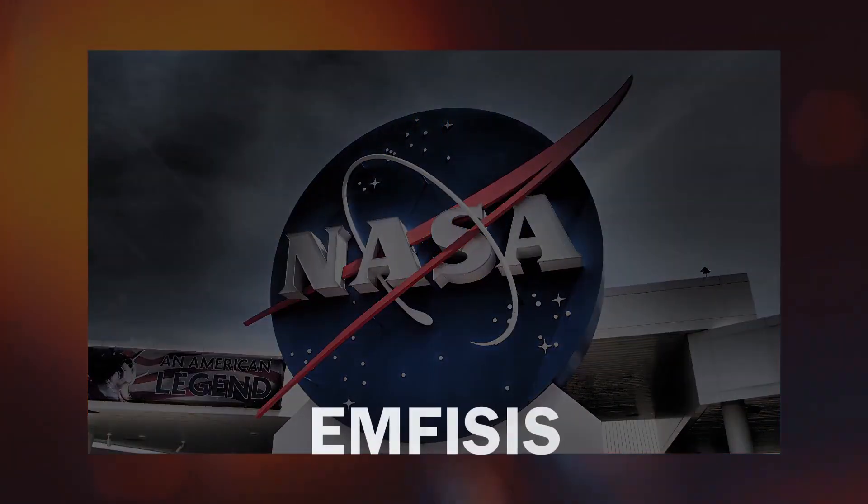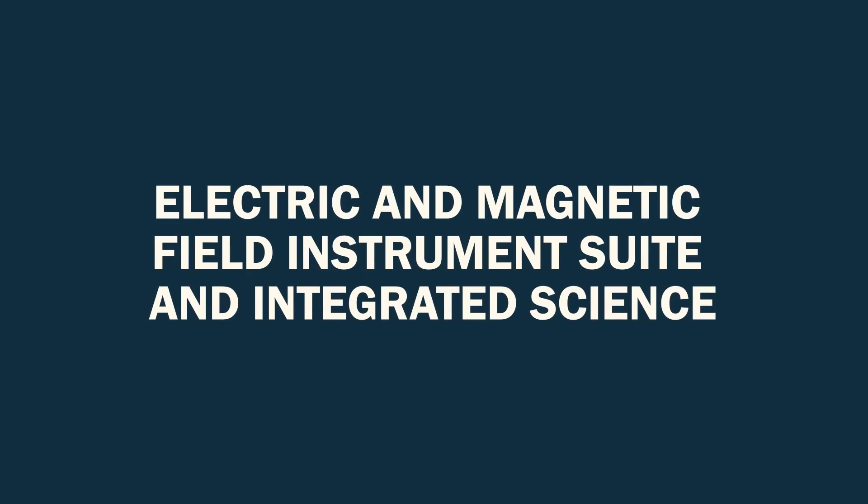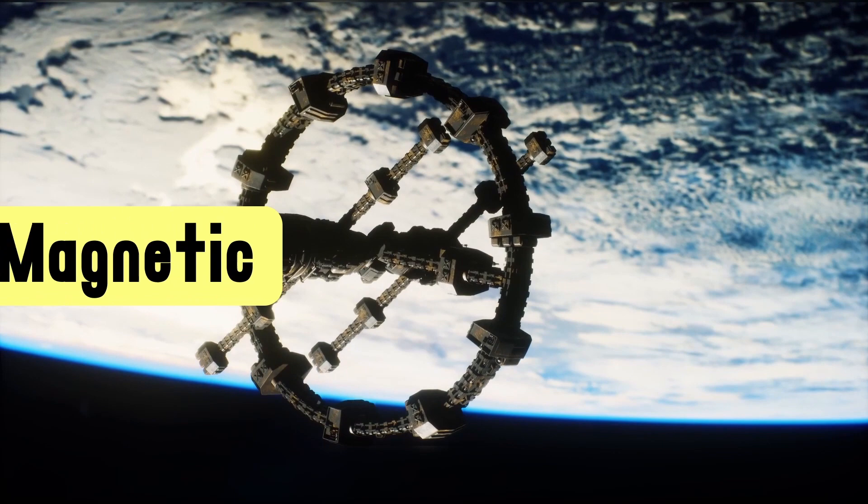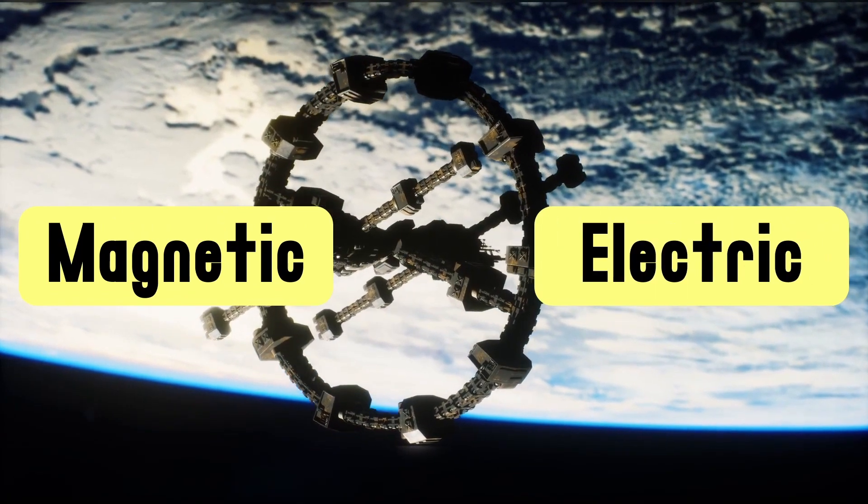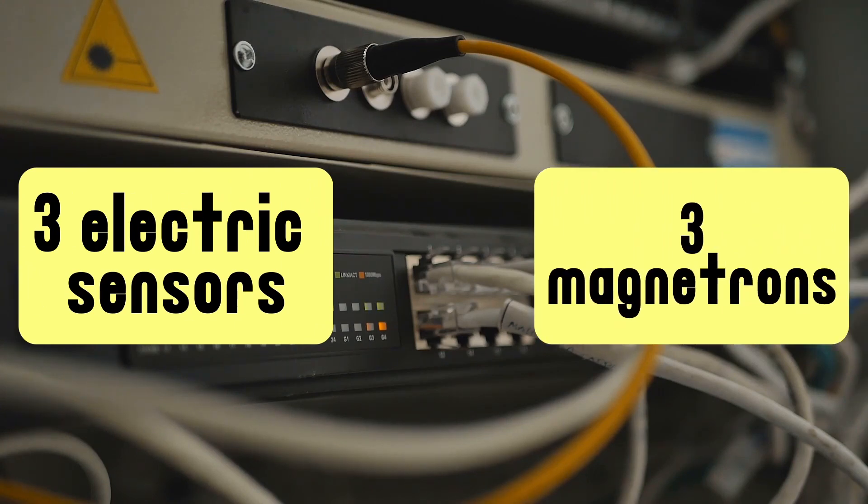NASA has an instrument called EMPHISIS, Electric and Magnetic Field Instruments Suite and Integrated Science, plugged into two probe spacecraft that measure magnetic and electric interference as they circle the Earth. There are three electric sensors that measure the electric disturbances, and three magnetometers that measure the fluctuations in magnetic fields.